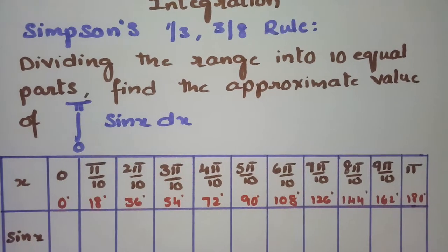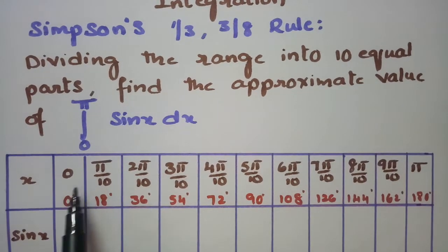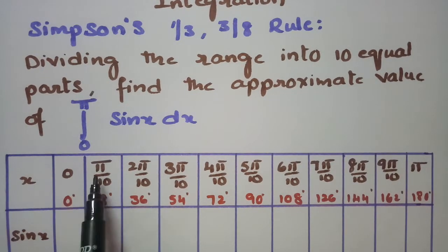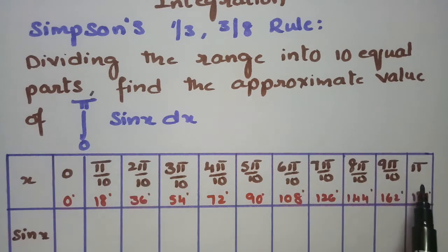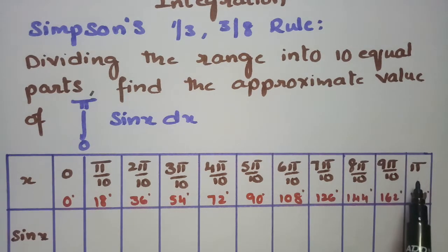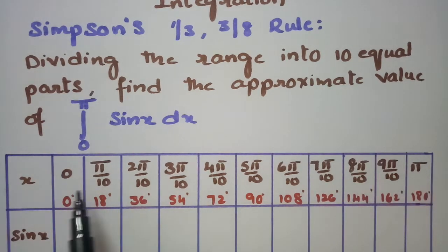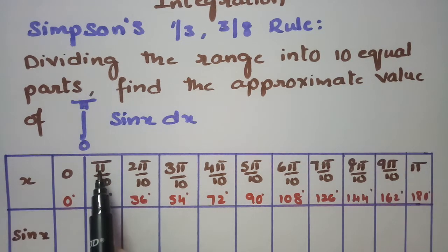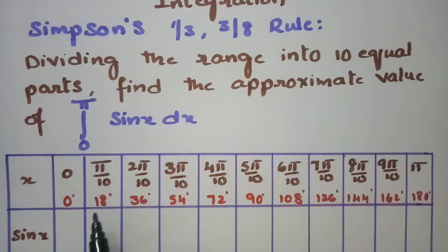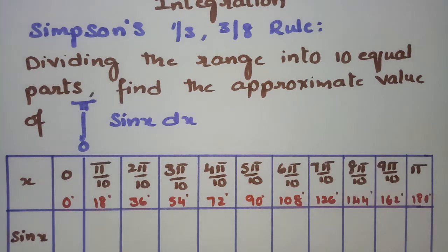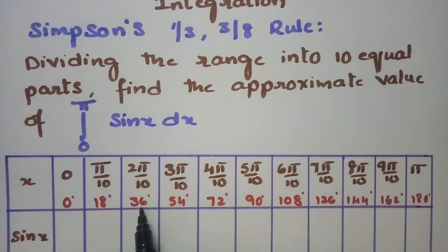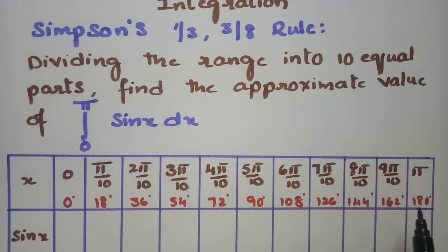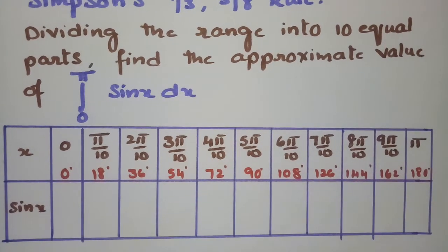Our x values are 0, π/10, 2π/10, and so on till 10π/10. Since π is 180 degrees, π/10 equals 18 degrees. So the x values in degrees are 0, 18, 36, 54, and so on up to 180 degrees.